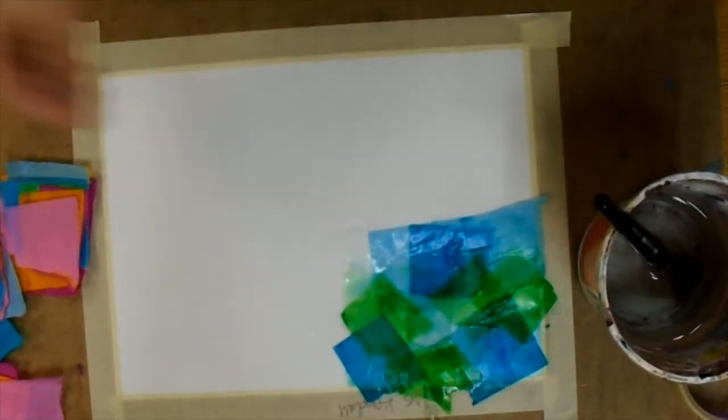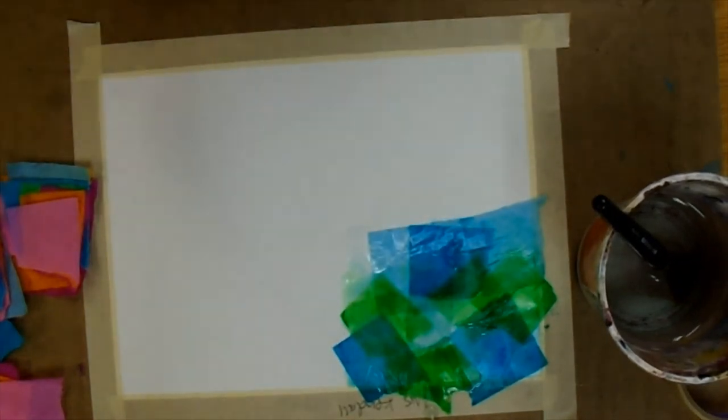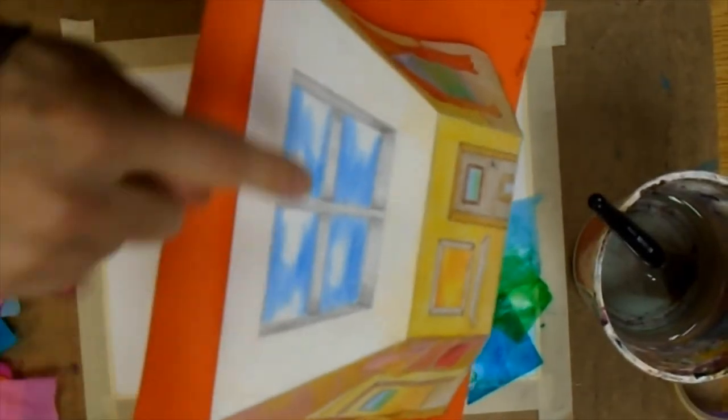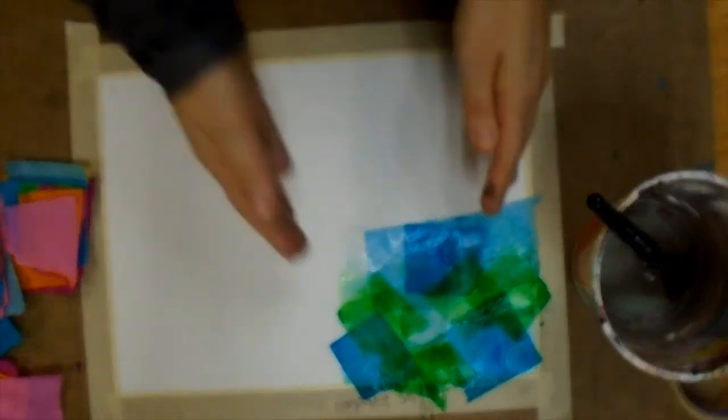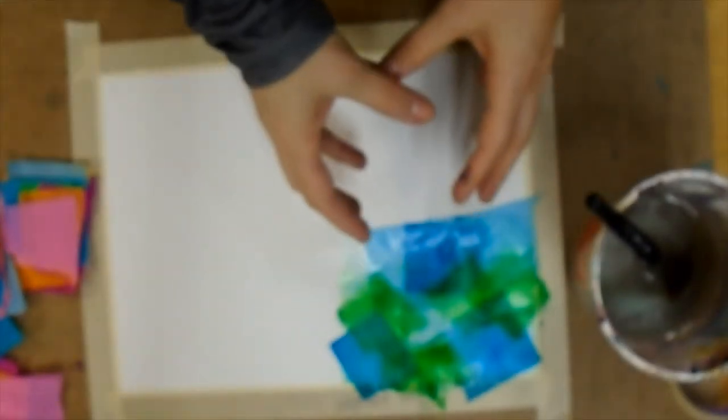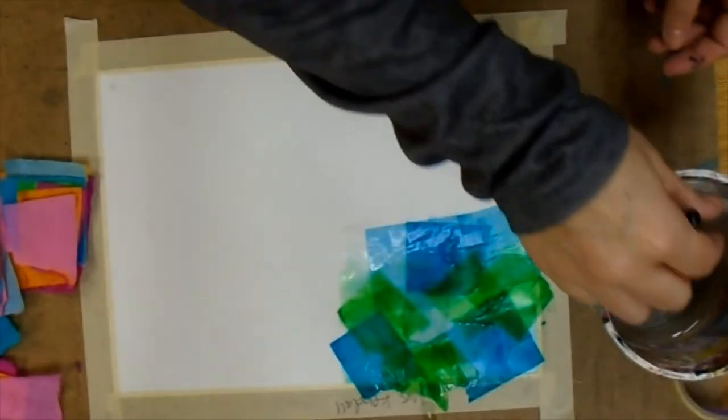So maybe I'm imagining that one half of my paper might become like the sky area that you might see through a window. So I might do half of this with my blues and greens. But the other half I might use for a wall.